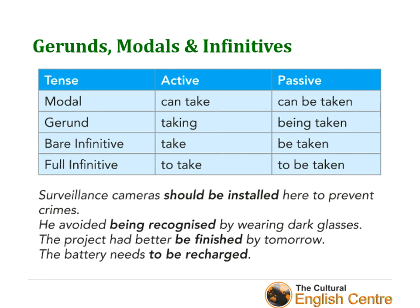From unit 8 you've already seen full infinitives (to + verb) and bare infinitives (verb on its own). We also use these verb forms in the passive voice. When we want to change an active sentence with a modal or another modal verb, we need to use 'be' right after the modal verb and before the main verb.